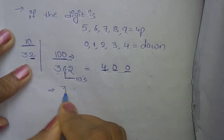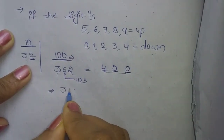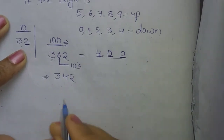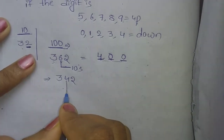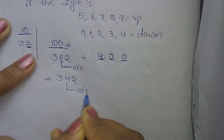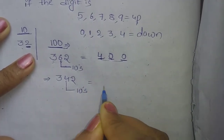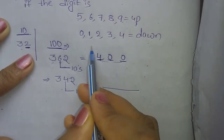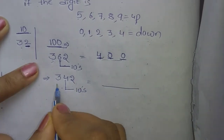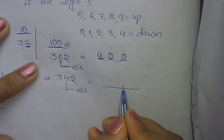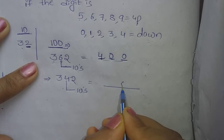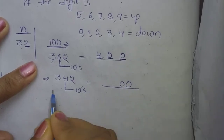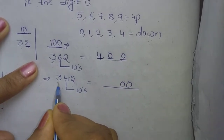For example, 342. We look at the tens place. In the tens place there is 4. The number 4 means we round down, so the tens place becomes 0. The number in the hundreds place stays the same, and the answer is 300.